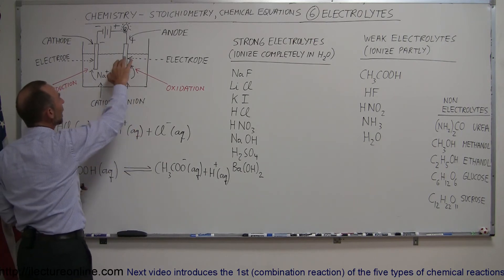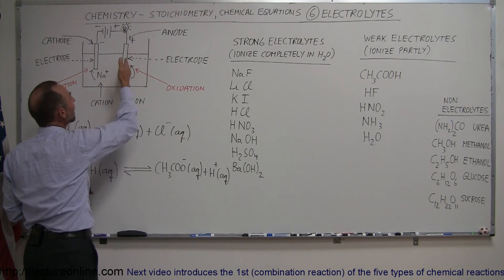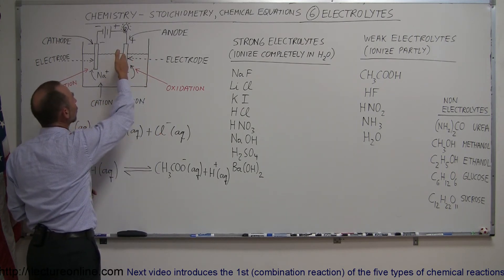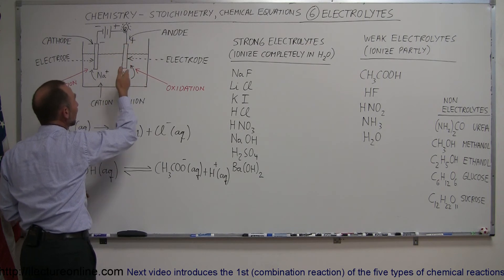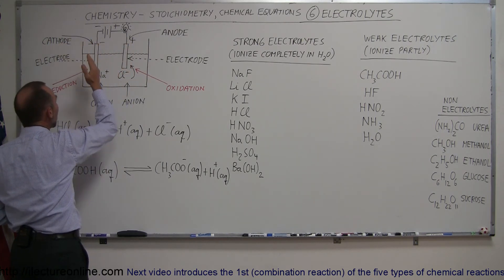And the other anode, which is positively charged and attracts negative anions, is called the anode. So the anode is positively charged, which attracts negative ions. The cathode is negatively charged, attracts positive ions.